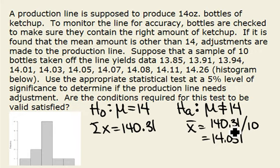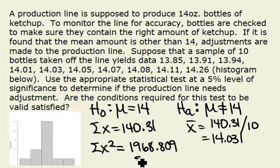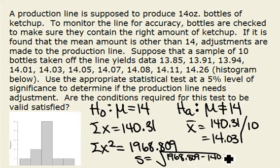Standard deviation s: if you took the x² values and added them up, you'll find that's 1968.809. So s is going to be the square root of that value minus our 140.31 squared, divided by our 10, all divided by our 9. What you should find for this is 0.115.